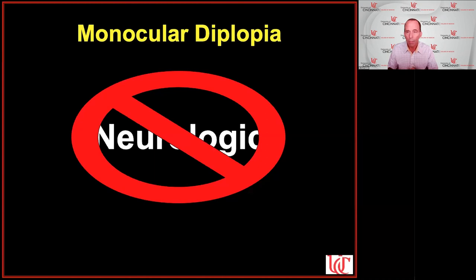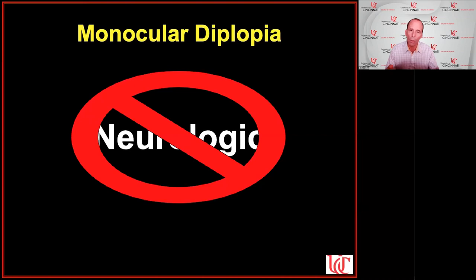Before you start looking at alignment and making measurements, make sure it's binocular, not monocular. Occasionally I see patients who don't know if their intermittent double vision is monocular or binocular. I tell them they have homework: next time they have double vision, cover each eye and call me to let me know if it's monocular or binocular, because the list of things causing one or the other are very different.